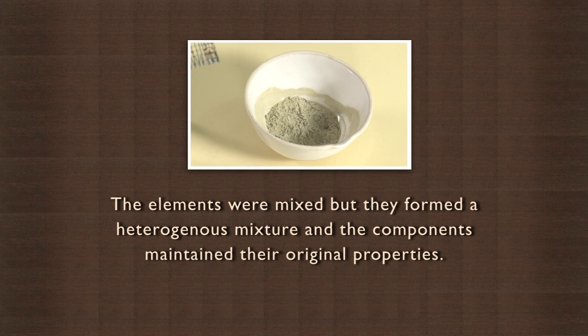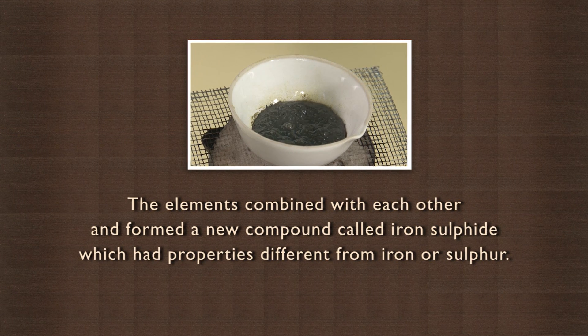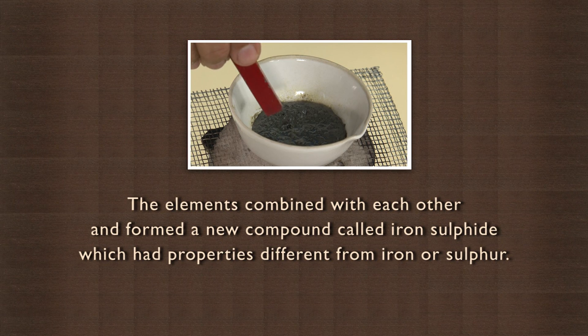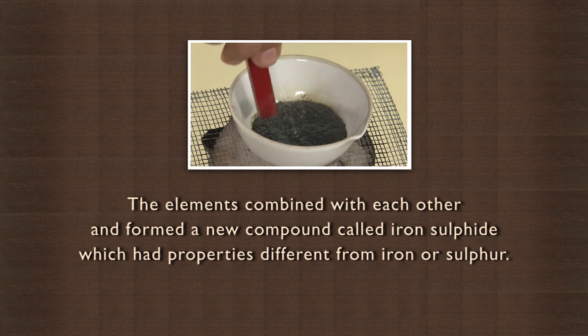So in the first case, the elements were mixed but they formed a heterogeneous mixture and the components maintained their original properties. But in the second case, the elements combined with each other and formed a new compound called iron sulphide, which had properties different from iron or sulphur. So this is another pure substance with distinct texture and colour.